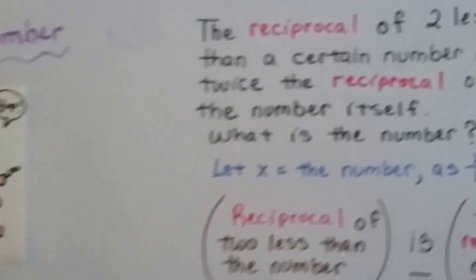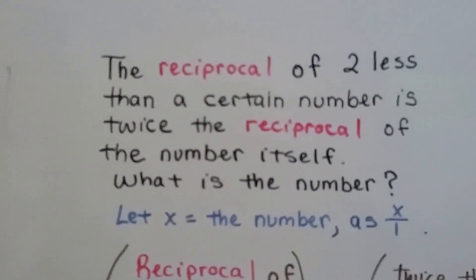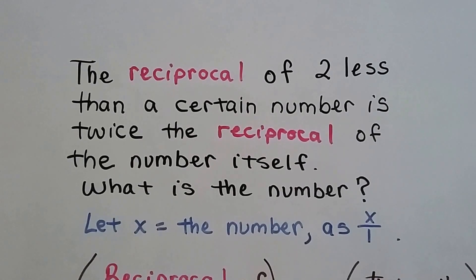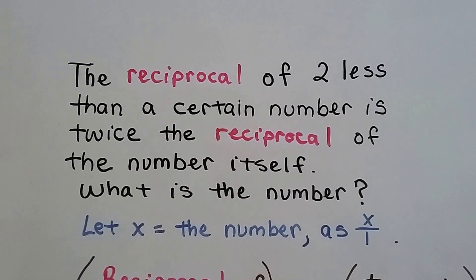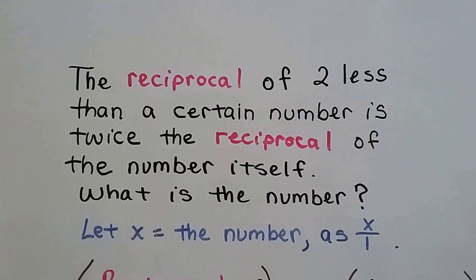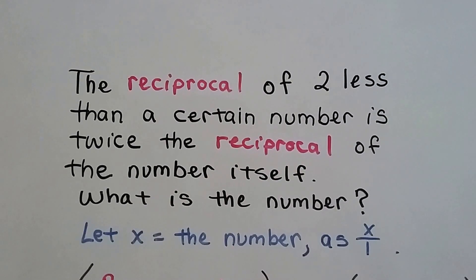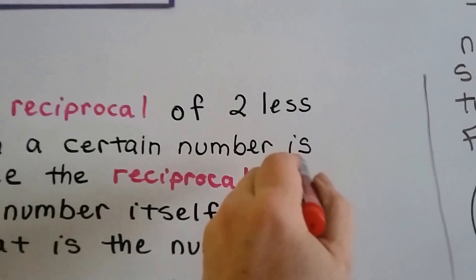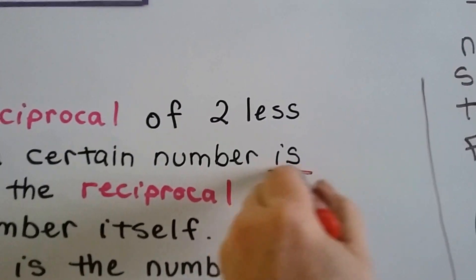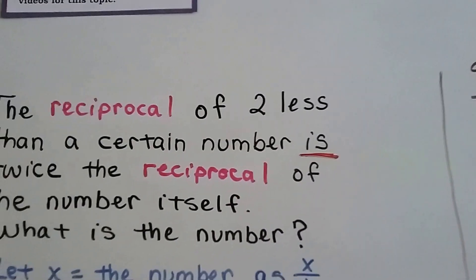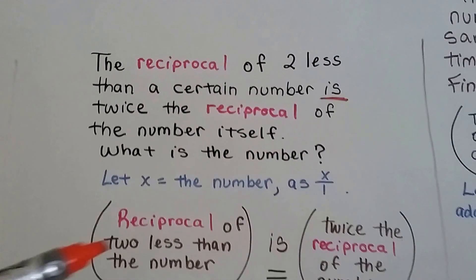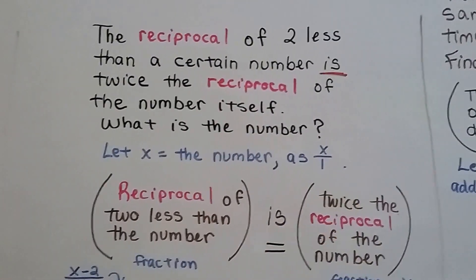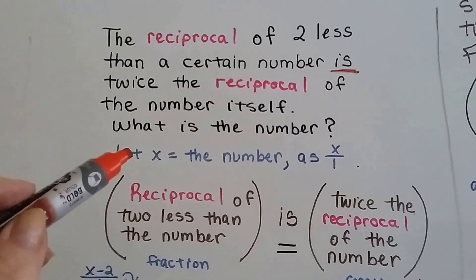Here's our first problem: the reciprocal of two less than a certain number is twice the reciprocal of the number itself. What is the number? We know the word 'is' means equal, so we can break this into two parts with 'is' as the equal sign. I'm going to let x be the number.